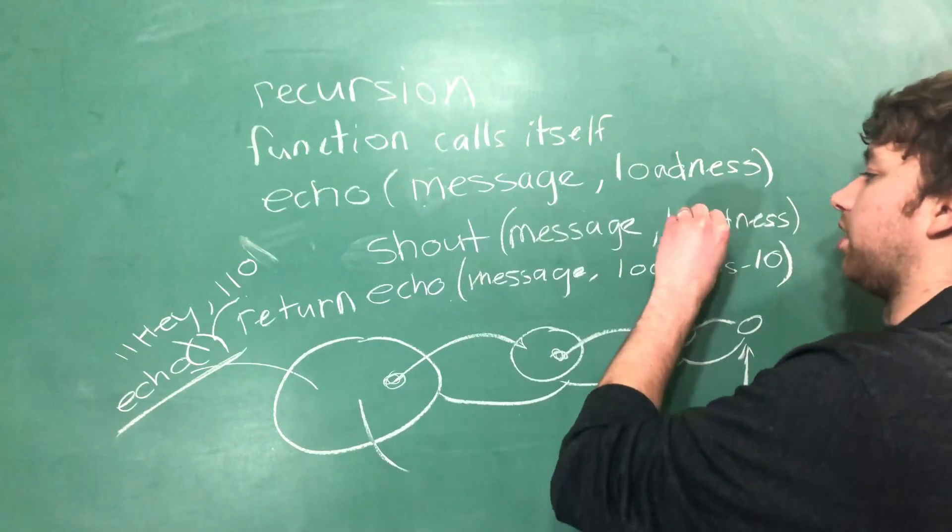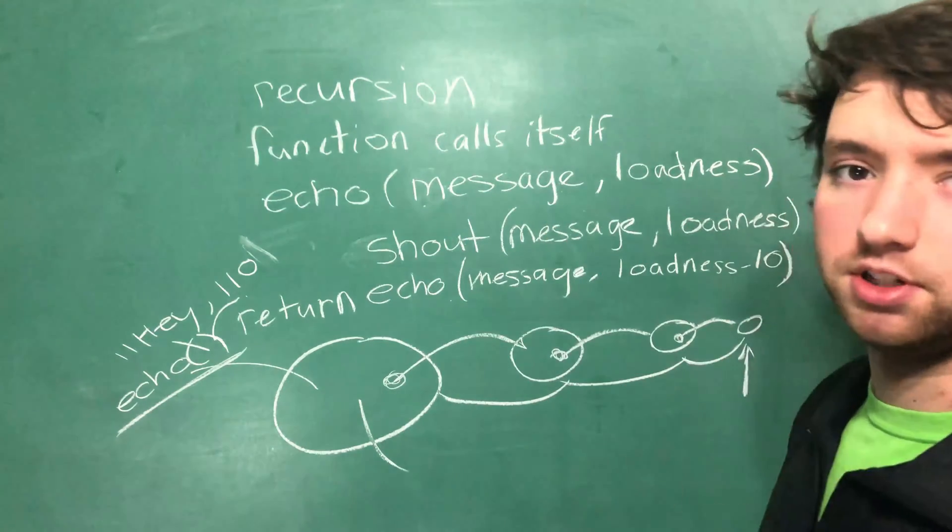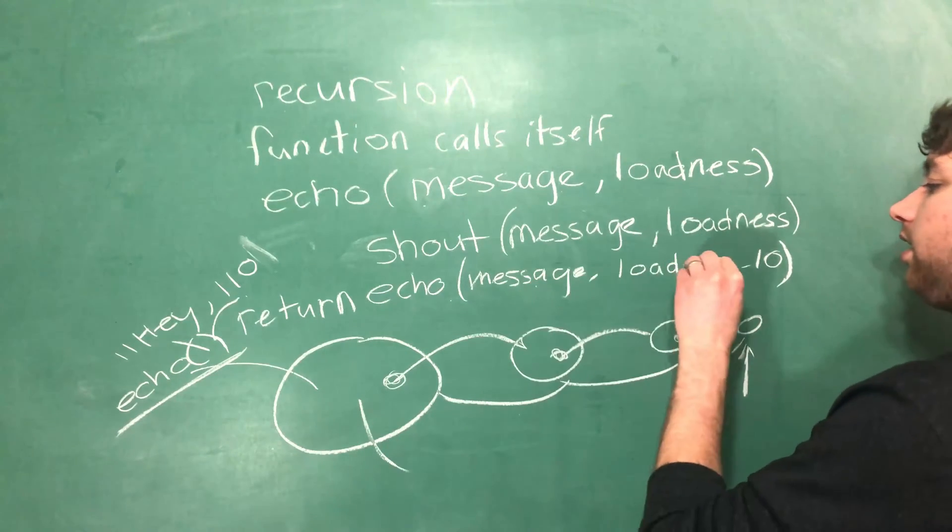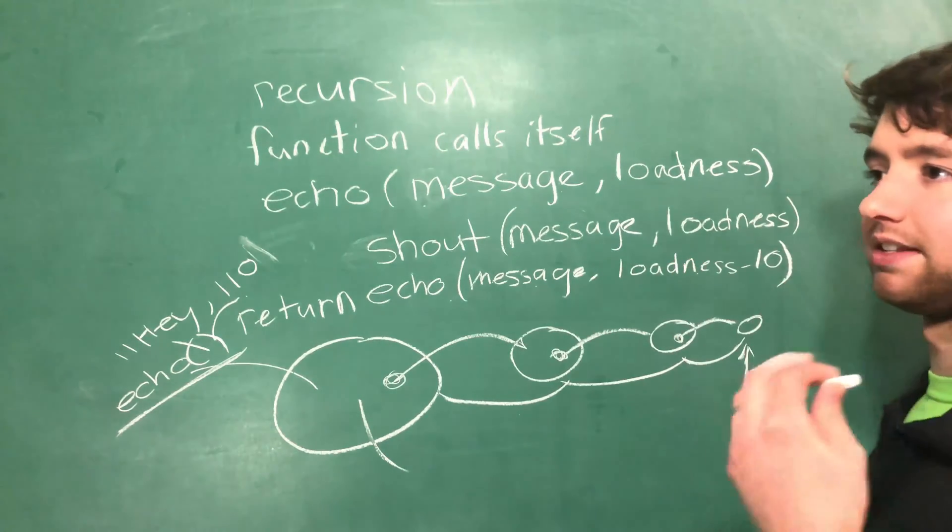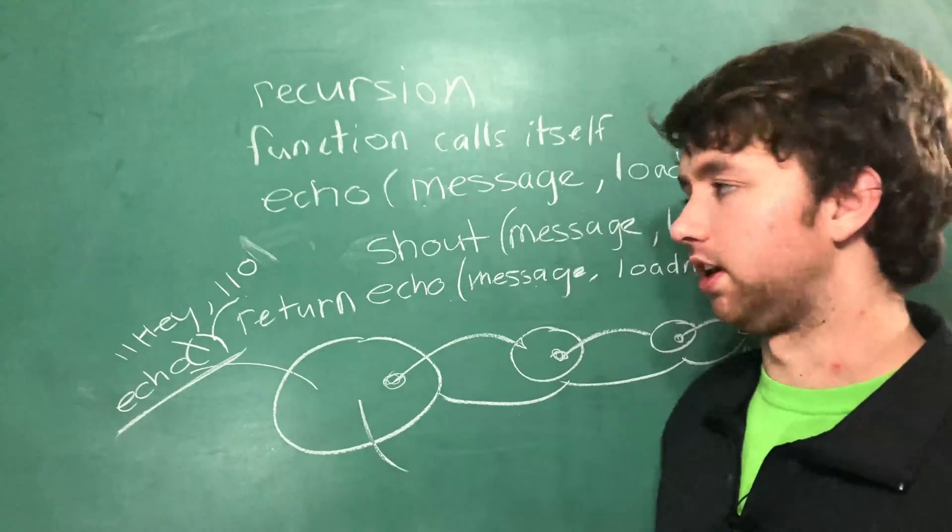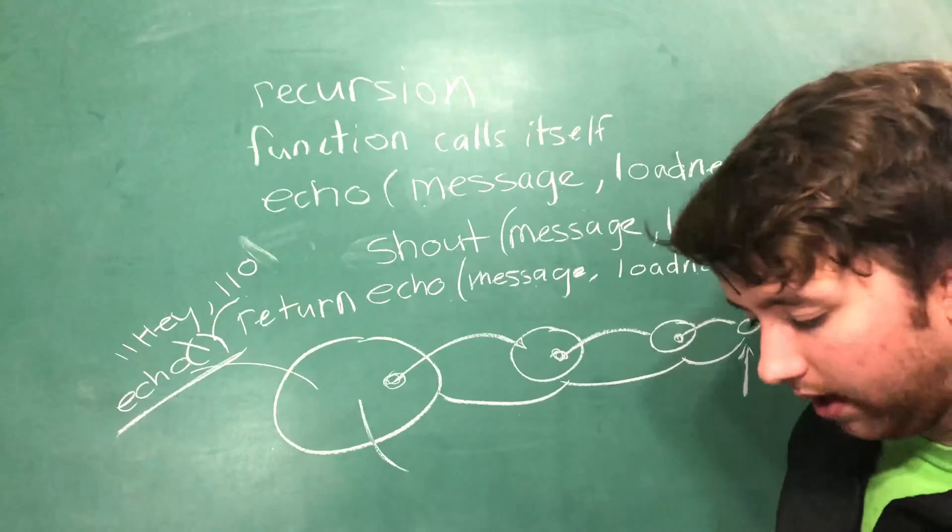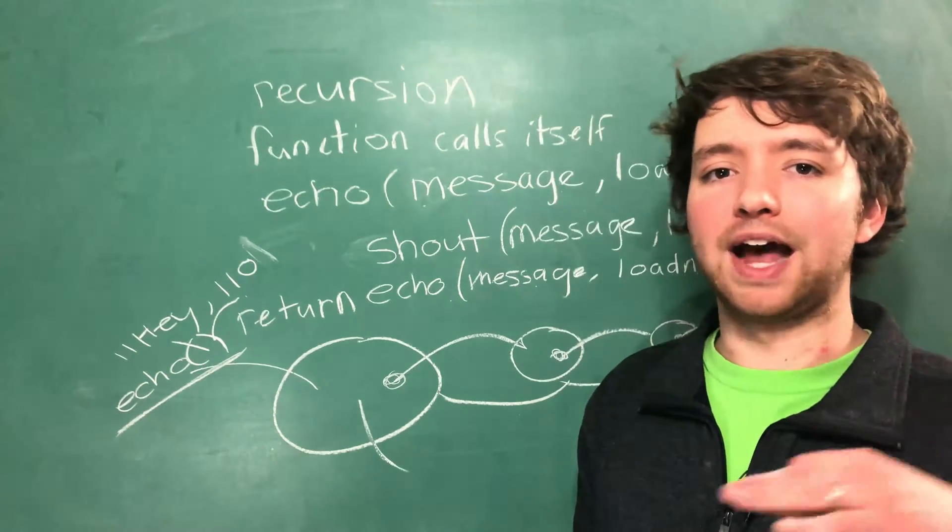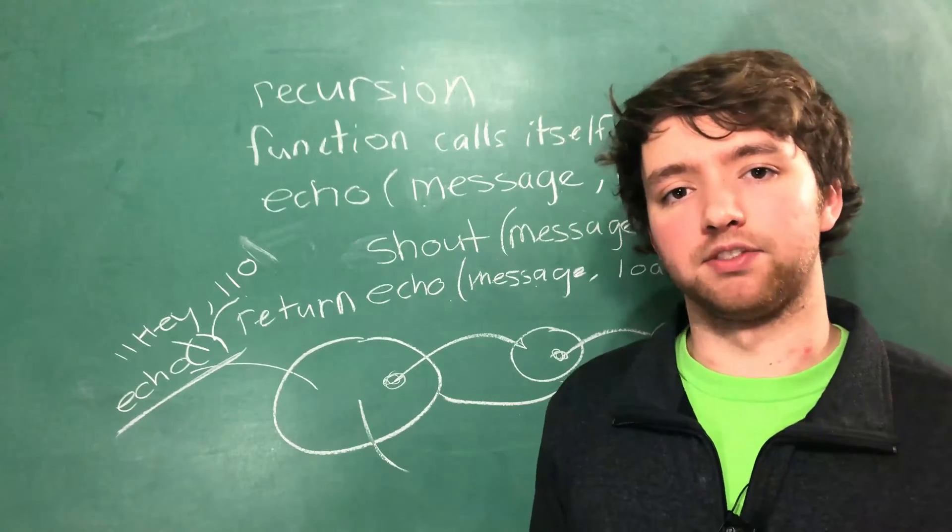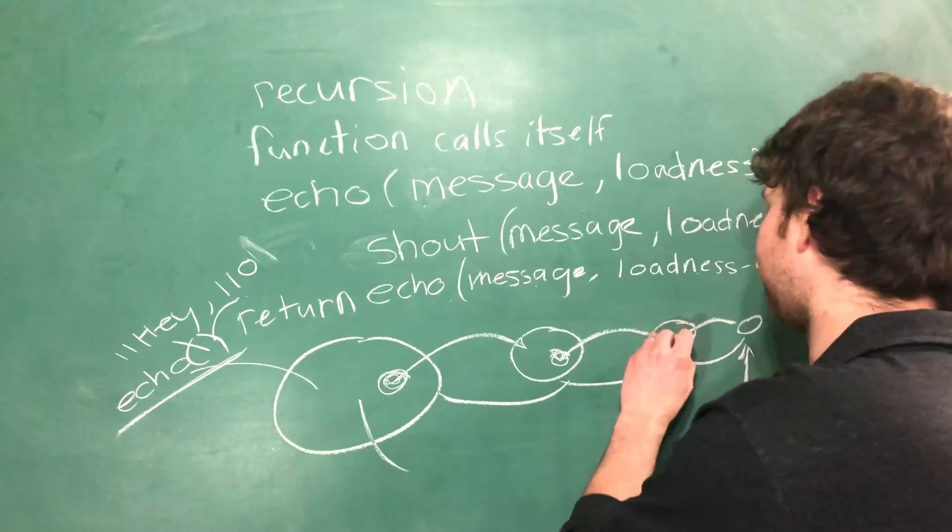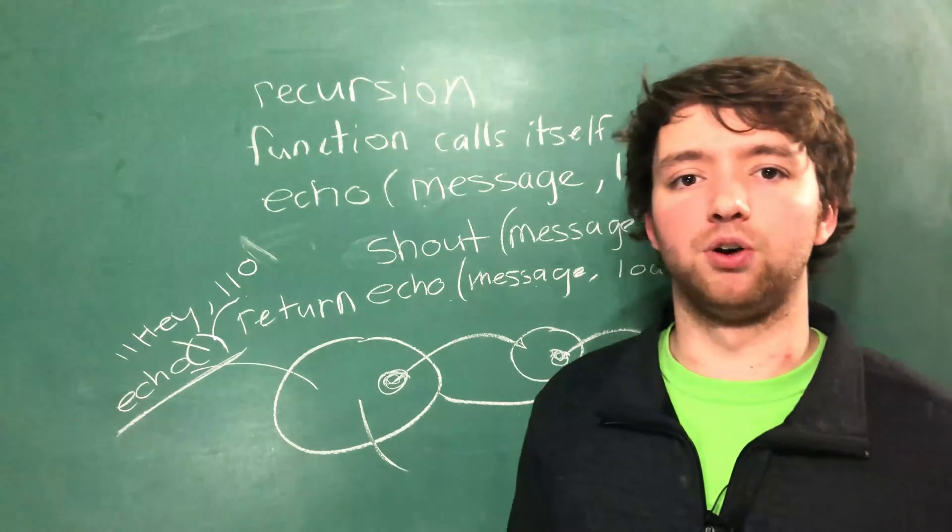Shout message and we're going to pass in zero. So you're going to shout it with zero volume. And then we're going to pass in message zero minus 10, or we're going to pass in negative 10 and then negative 20, negative 30, negative 40. And it's going to just keep on going until the loudness is infinitely small. Well, actually, you're going to keep it running until you run out of stack space because you have to remember these locations and you're going to get a stack overflow exception.